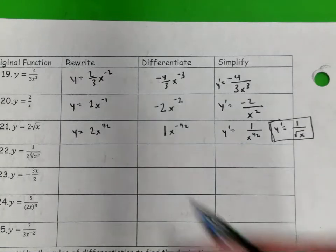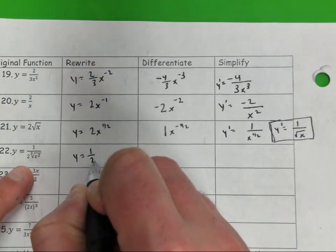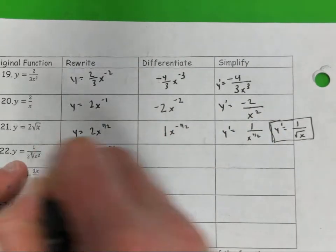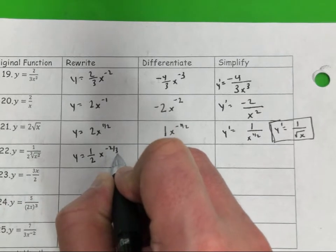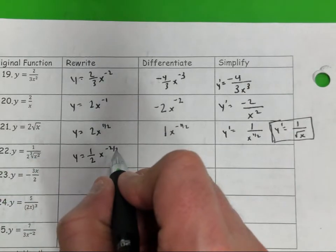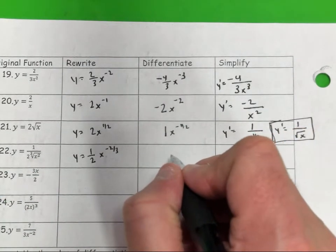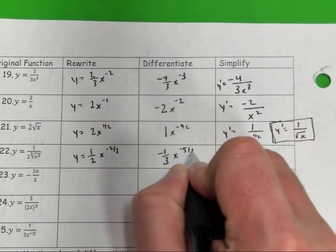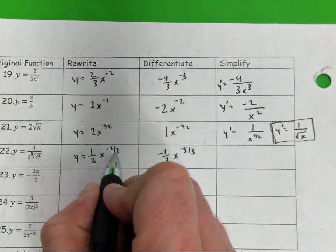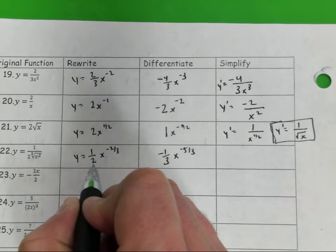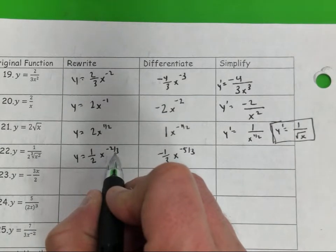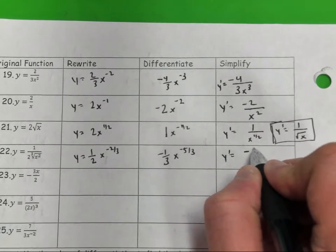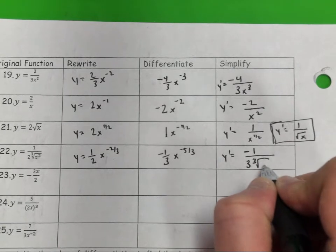Number 22 — y equals — I'm going to rewrite that as 1 half x to the... negative 2 thirds, because the root goes in the denominator of the exponent. Negative 2 thirds times 1 half gives me negative 2 over 6, which reduces to negative 1 third. Negative 2 thirds minus 1 gives me negative 5 thirds. So y prime equals negative 1 over 3 times the cube root of x to the 5th.